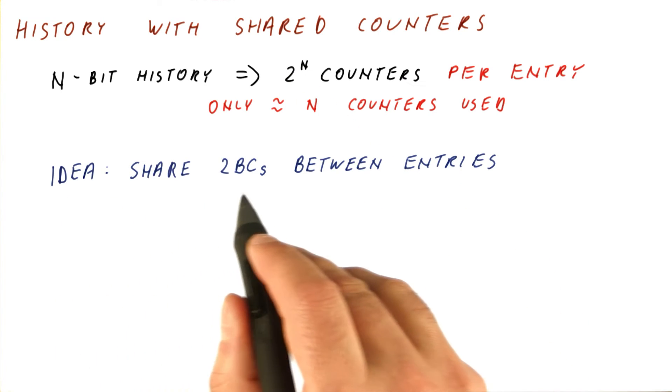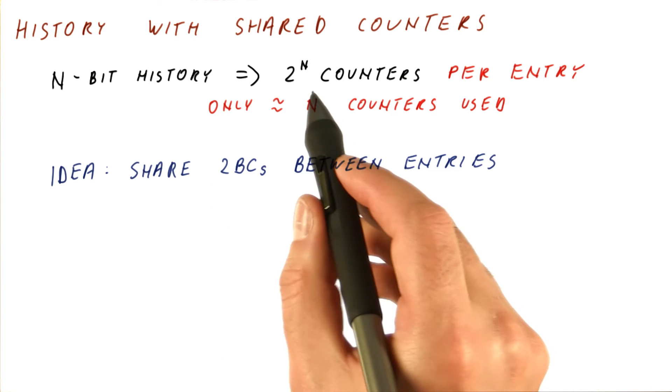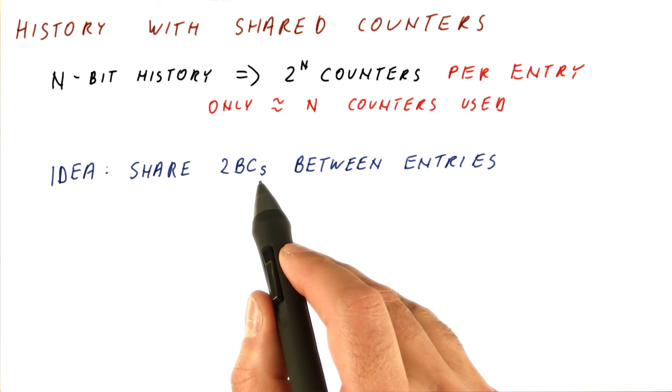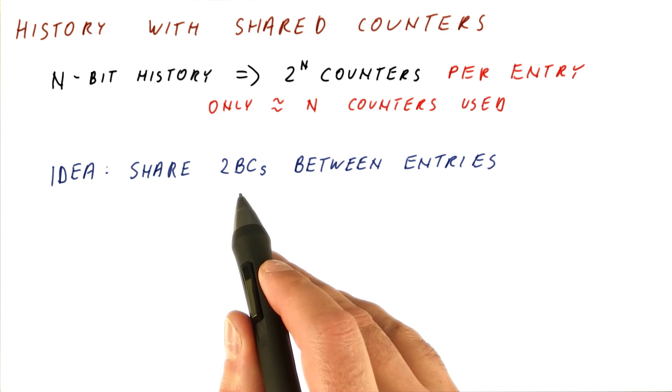So the idea here is to share these two-bit counters between entries. Instead of dedicating 2^n two-bit counters to each entry, we will have a pool of two-bit counters that entries will then use. But it is possible that different entries with different program counters and different histories end up using the same two-bit counters.